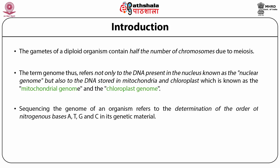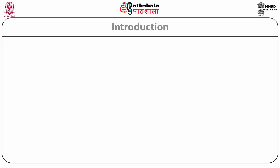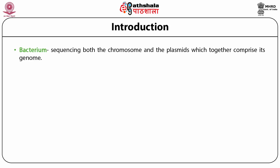Sequencing the genome of an organism refers to the determination of the order of nitrogenous bases in its genetic material. For example, in the case of a virus, it means knowing the base composition of only a single chromosome. In a bacterium, sequencing means sequencing both the chromosome and the plasmids which together comprise its genome.